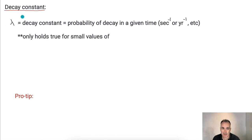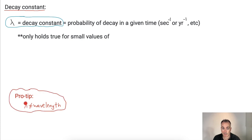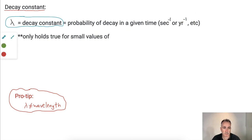We have something called the decay constant — this is really important. The decay constant, lambda, is NOT equal to the wavelength. It's unfortunate because we often use lambda for wavelength, but here we mean the decay constant. It's known as the probability of a decay in a given time, so the units will be seconds to the minus one, or years to the minus one, or days to the minus one. It only holds true for small values of lambda times t.